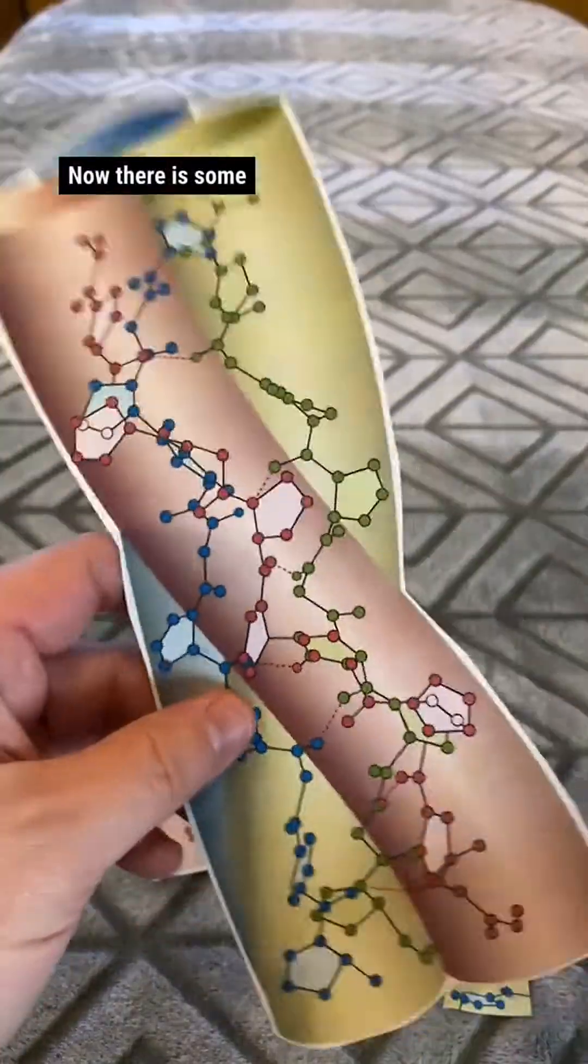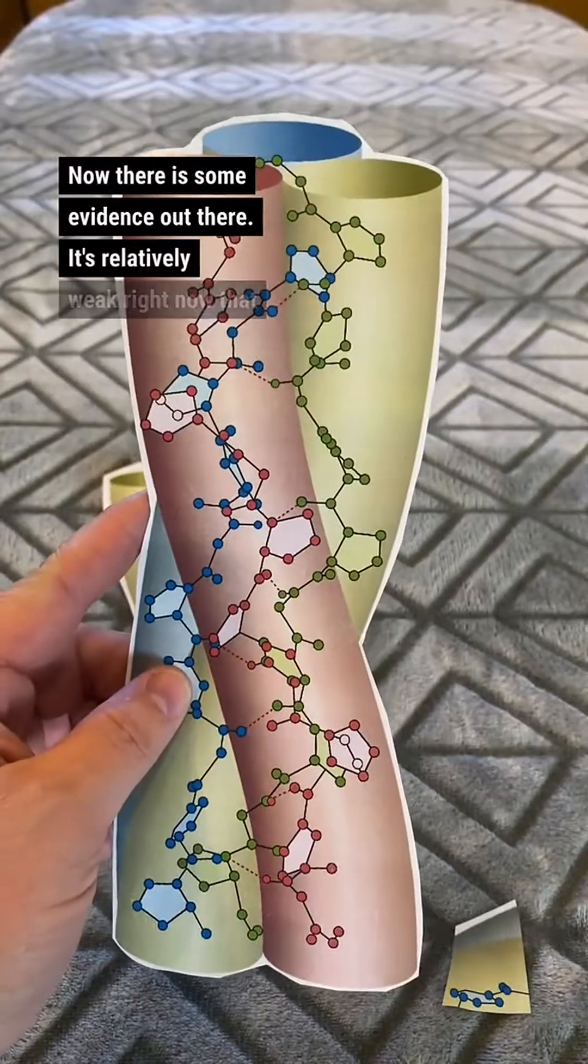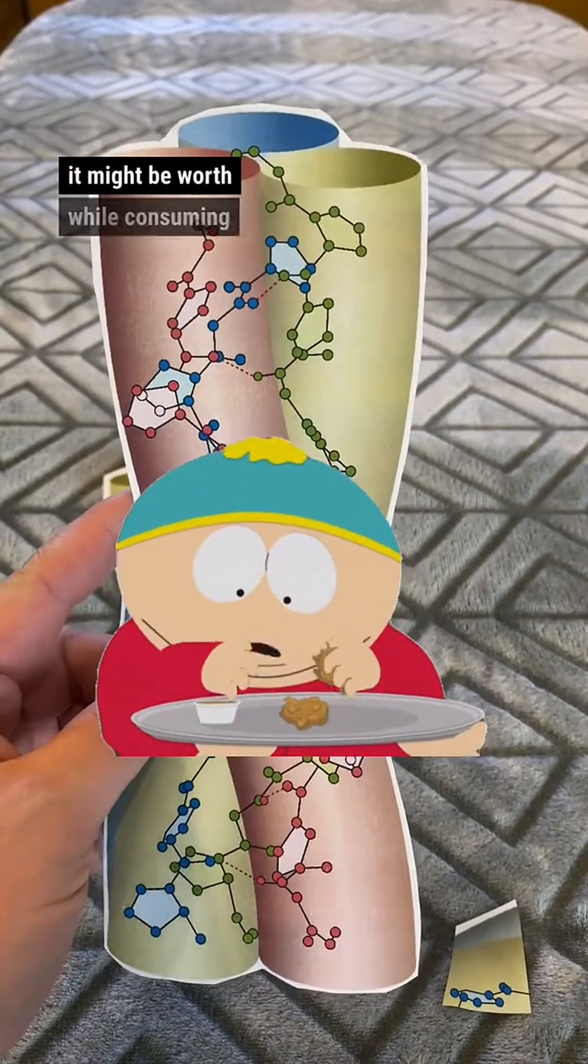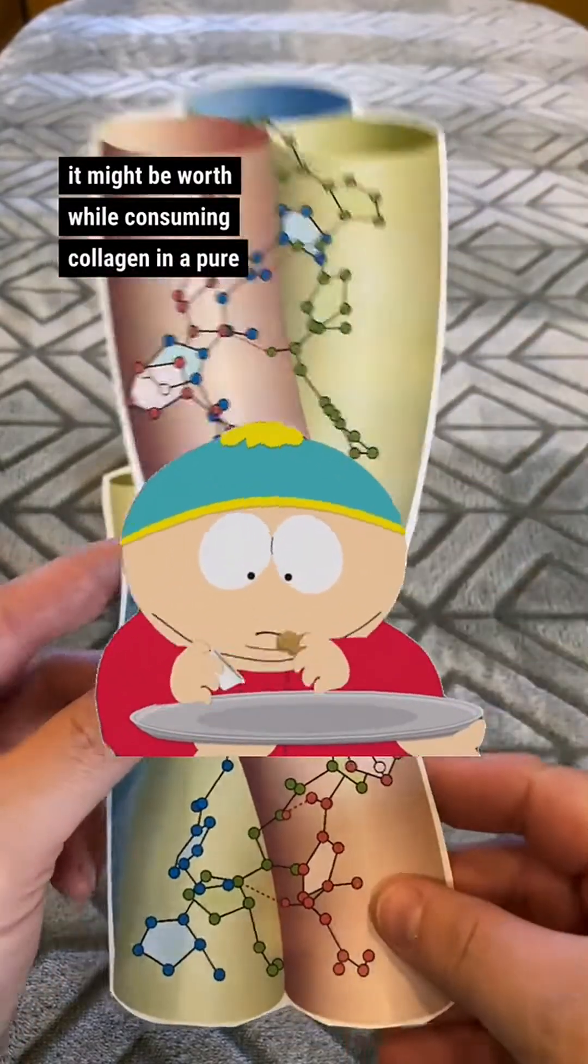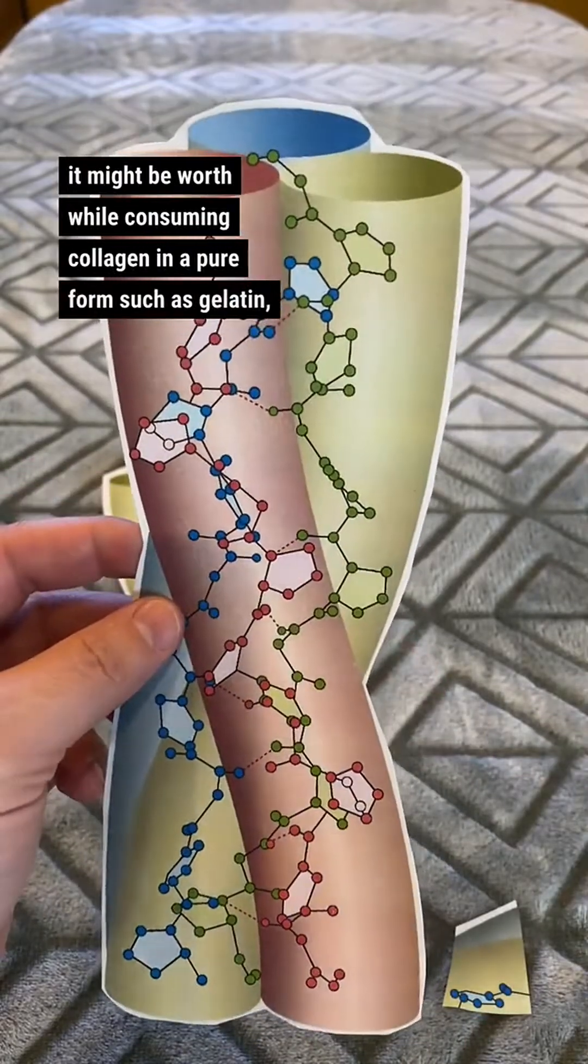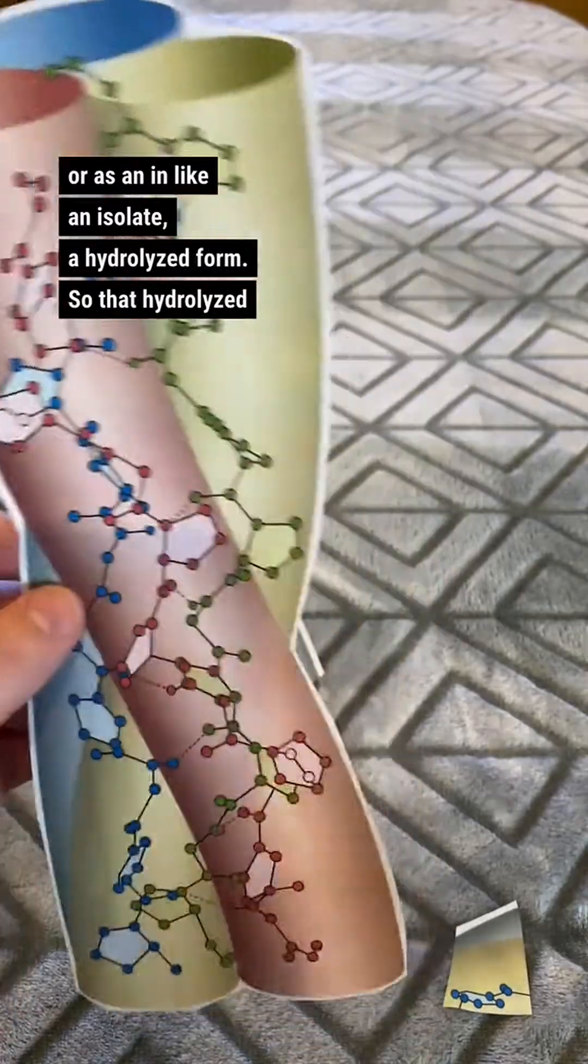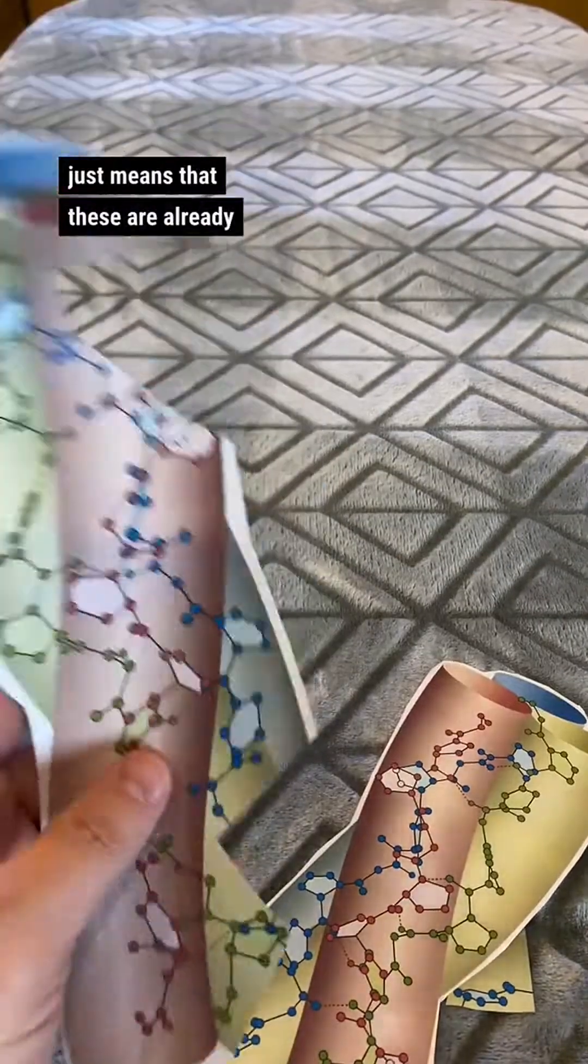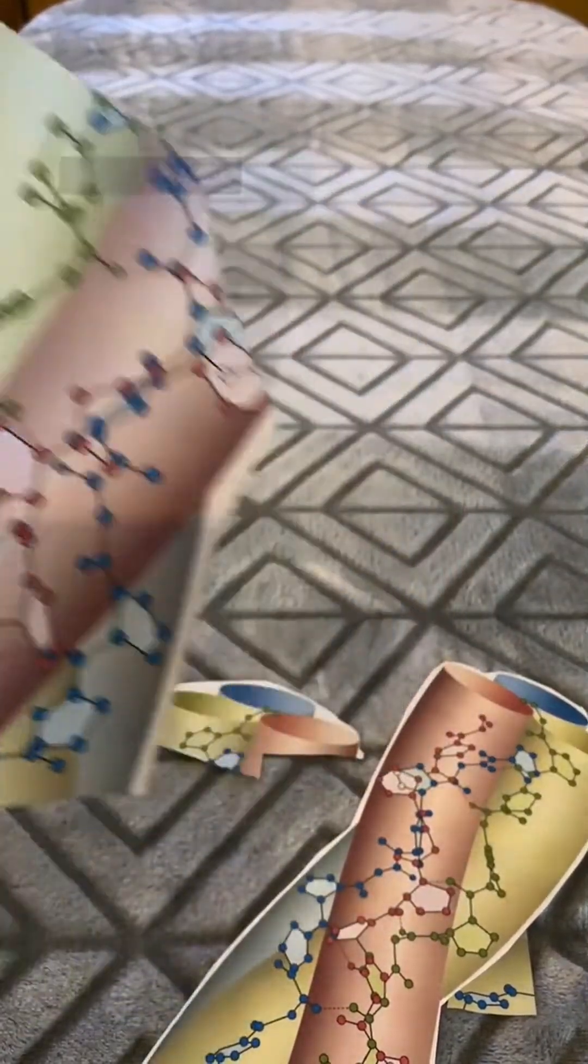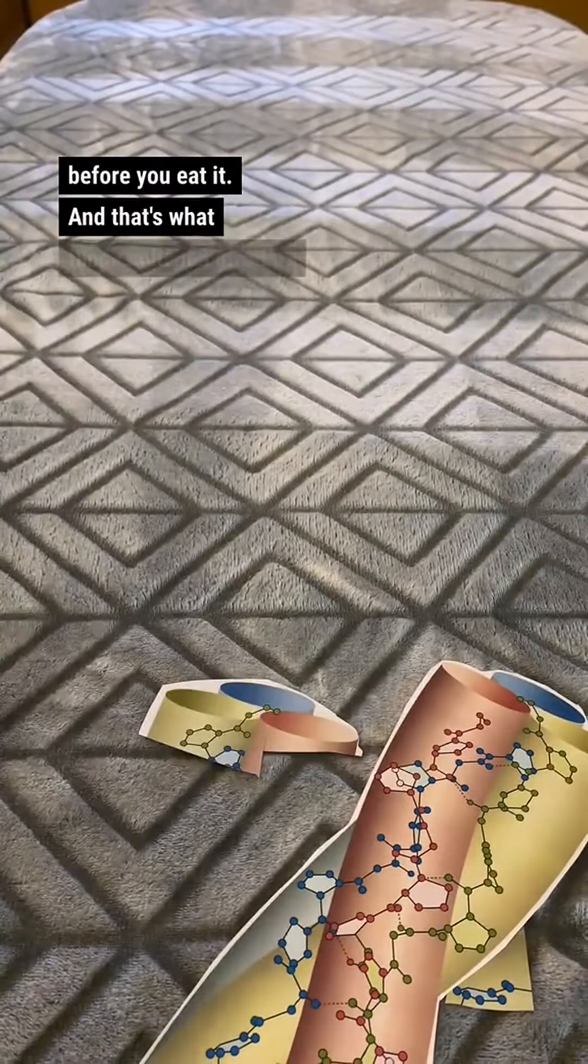Now, there is some evidence out there, it's relatively weak right now, that it might be worthwhile consuming collagen in a purer form, such as gelatin, or as in an isolated hydrolyzed form. So that hydrolyzed just means that these are already broken down into amino acids before you eat it. And that's what those collagen powders are.